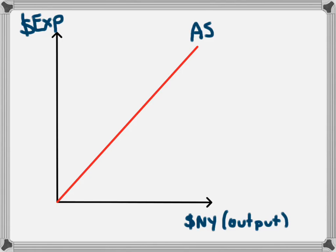Aggregate demand is the total demand for all goods and services in the economy and is represented by the total spending of all sectors of the economy. We can see this in an equation.